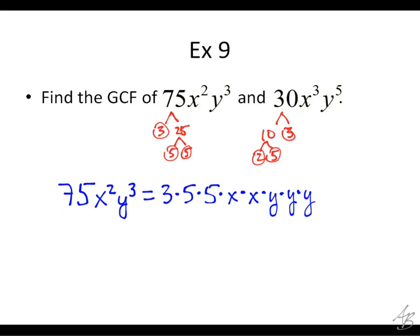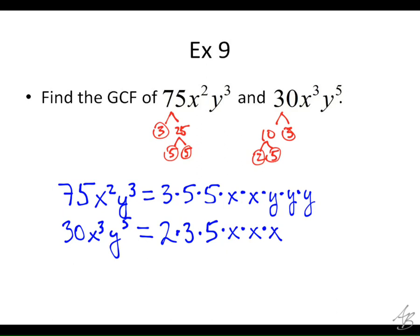For 30x³y⁵, the 30 is going to be 2 times 3 times 5. Then how many x's? Three: times x times x times x. And then how many y's? Five: times y times y times y times y times y.